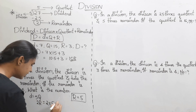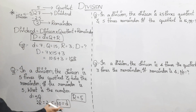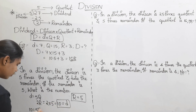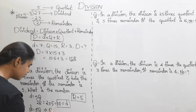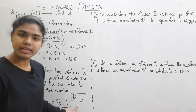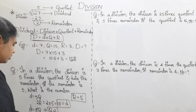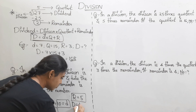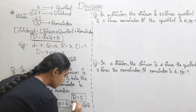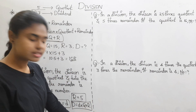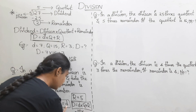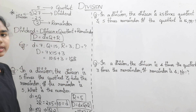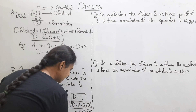Remainder is 5, so divisor equals 2 into 5, that is 10. So d equals 10. Now 10 equals 5Q, so Q equals 2. Using the formula: dividend equals divisor into quotient plus remainder — 2 into 10 is 20, plus 5 equals 25. So the answer is 25. Very simple.